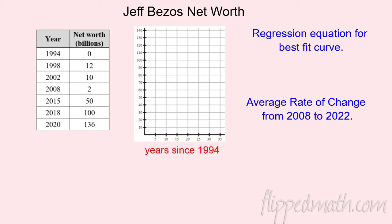On the x-axis I have 'year since 1994' — it's just cleaner that way. On the y-axis I've got net worth in billions. Plotting some points: he started at zero billion, in 1998 he's at 12 billion, in 2002 he's at only 10 billion. There was the dot-com bubble burst in 2000, and in 2008 he went down to only 2 billion. But since then Jeff Bezos has been on a roll — holy cow, this guy is worth some cash.